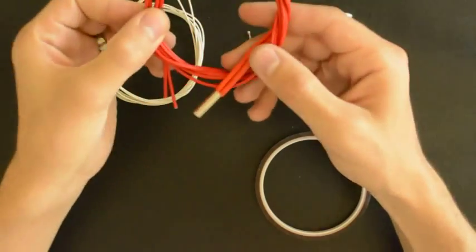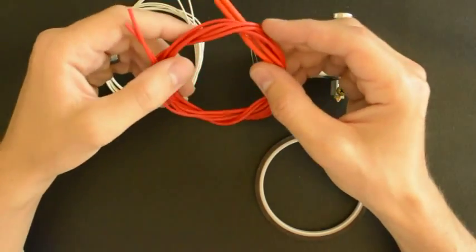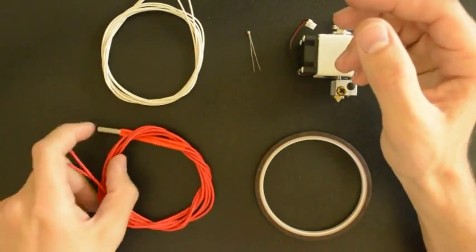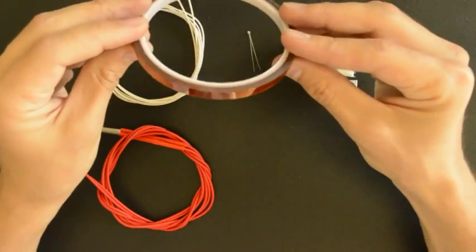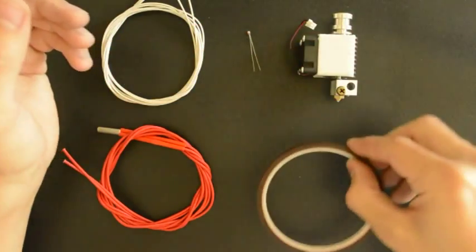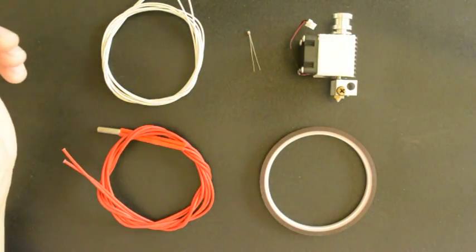Then you also need a 40 watt heater cartridge. This one is a 12 volt 40 watt heater cartridge. And then some Kapton tape. We like to use the 5mm Kapton tape for the all metal hot end.